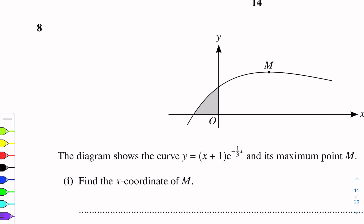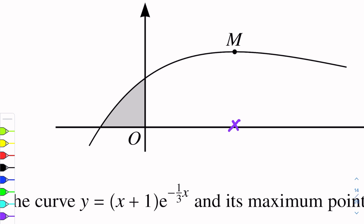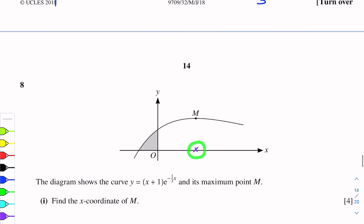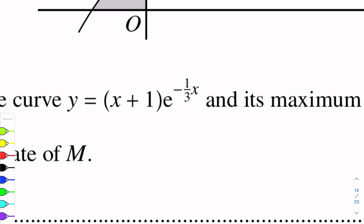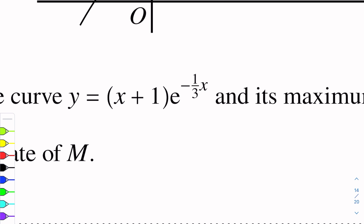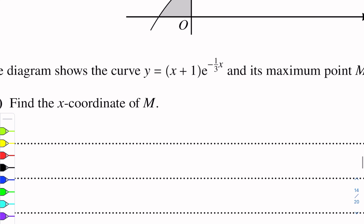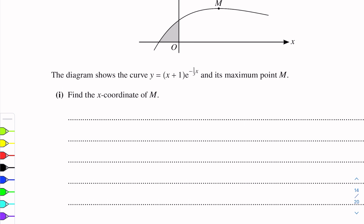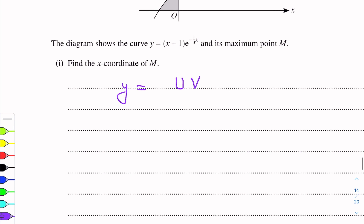Here x+1 is one function and e^(-1/3 x) is another function. So we will differentiate using the product formula. The product formula is: y = u·v, where u and v are functions of x. So dy/dx equals u·v' + v·u'.